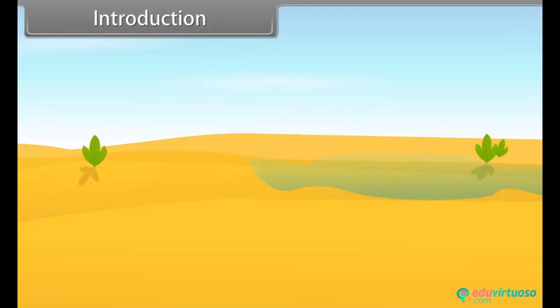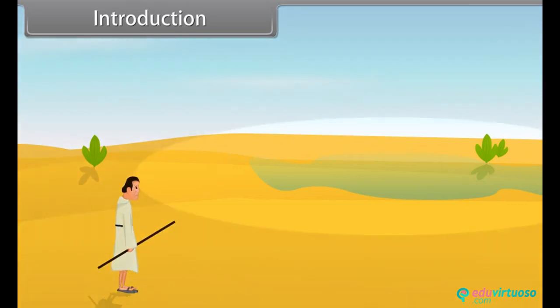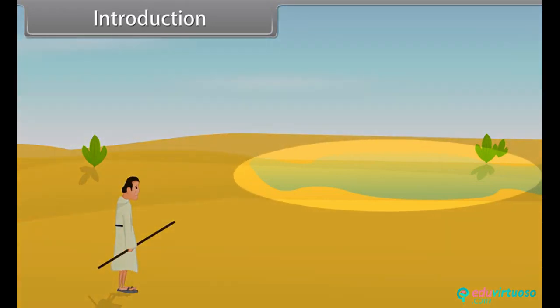Hey kids, today we learn ray optics and optical instruments. You must have heard that in a desert, one may see a misleading appearance of water at a certain distance. The answer is that this illusion of water is due to total internal reflection — an optical phenomenon that creates an illusion of water with inverted images of distant objects.